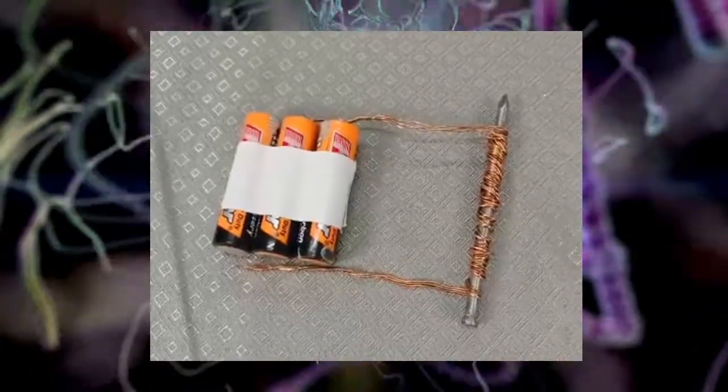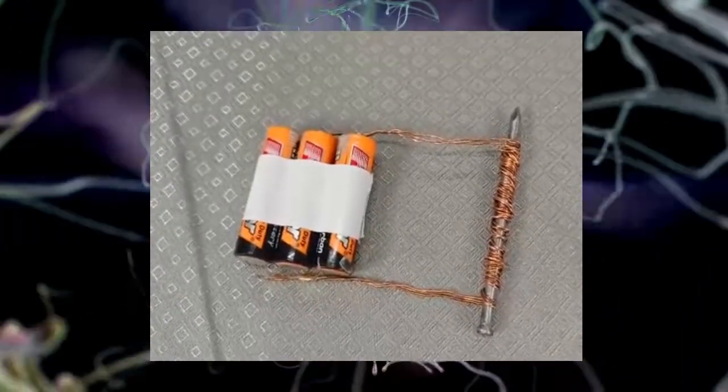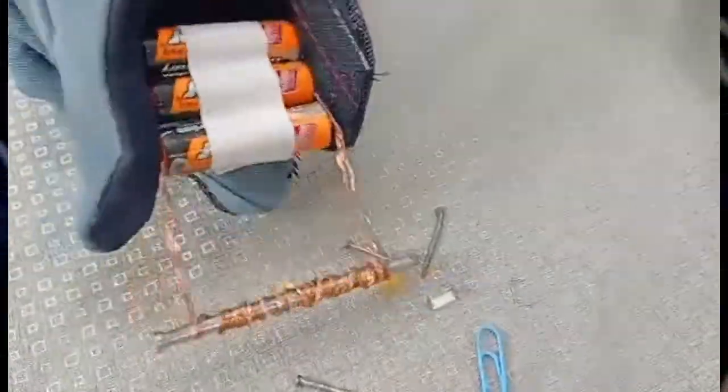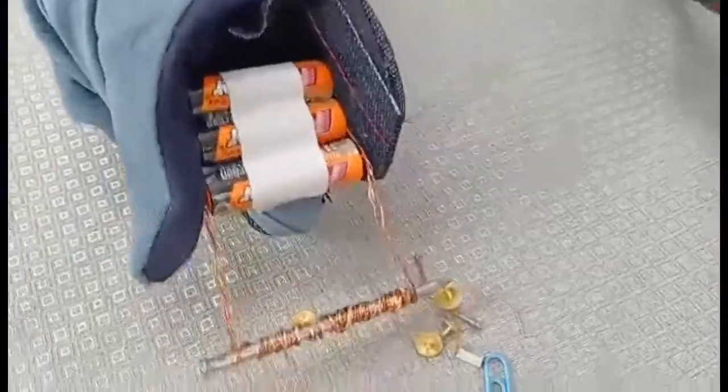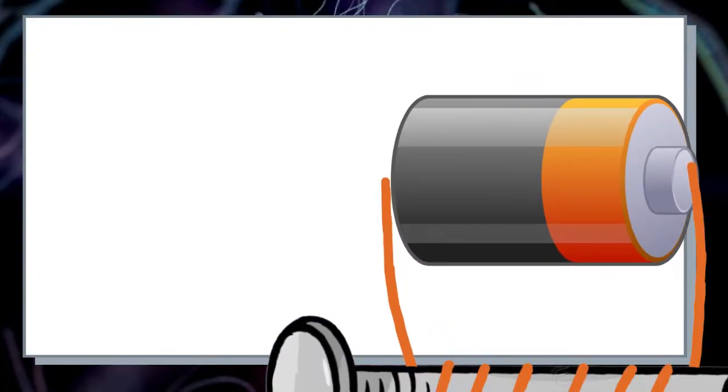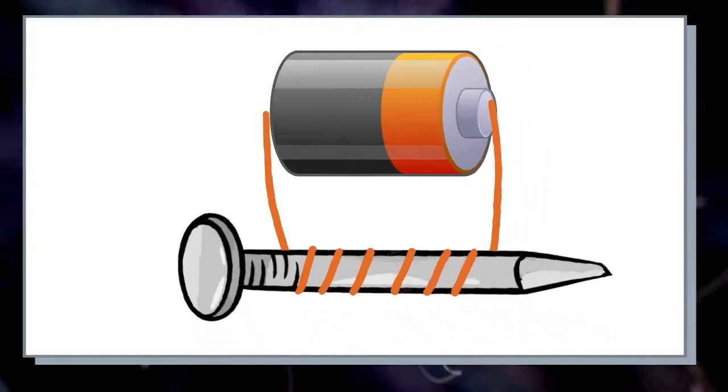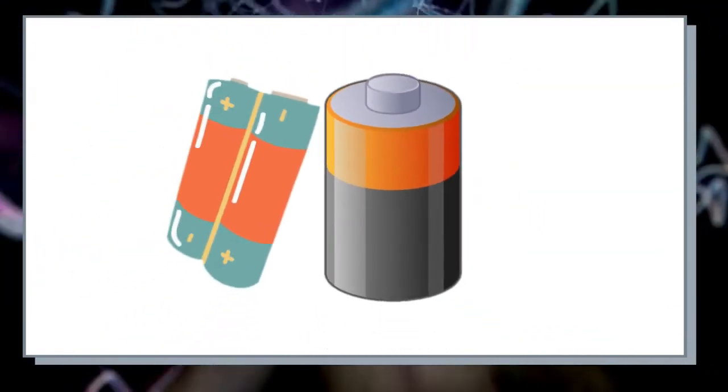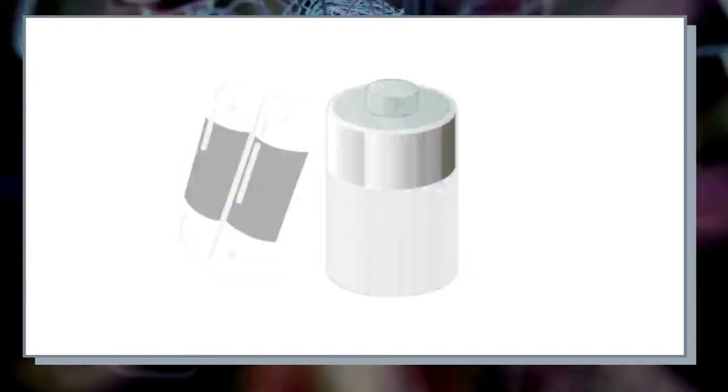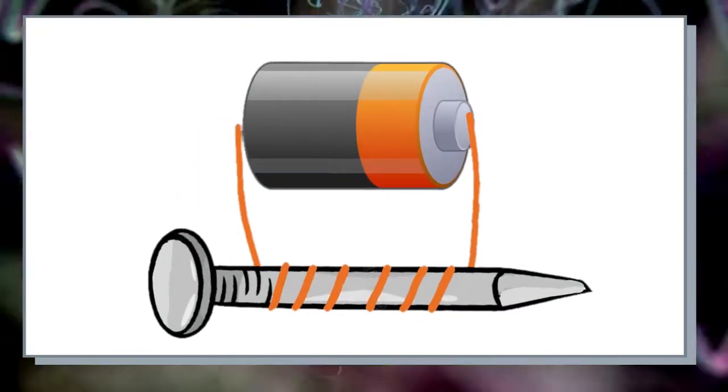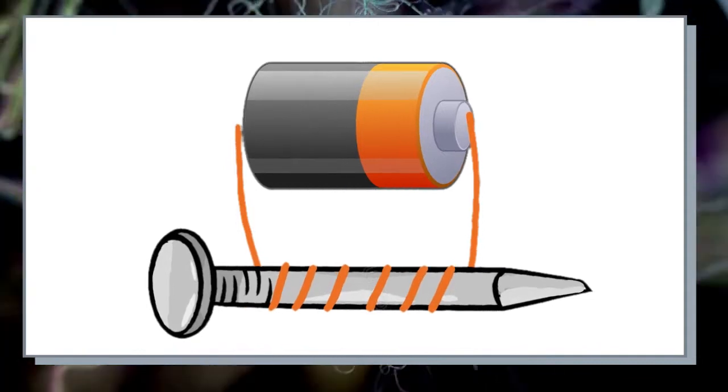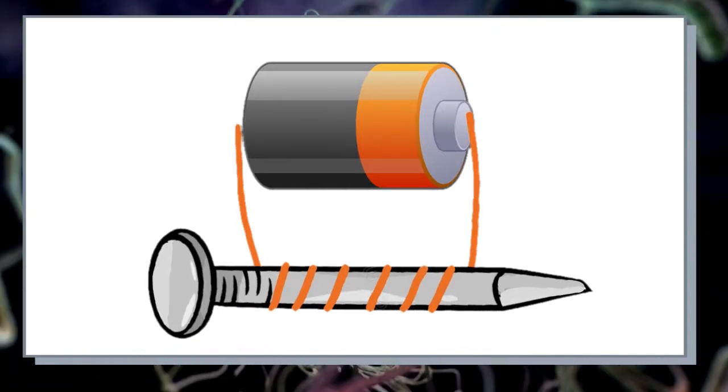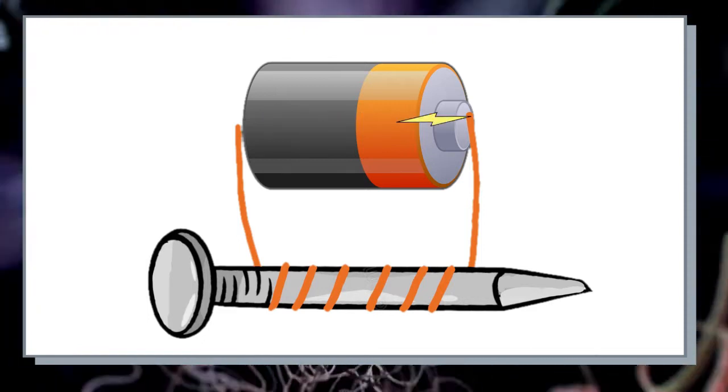Let's try these three batteries. Wow! More metals are attached to the electromagnet. It means that the number of power source or battery also affects the strength of electromagnet. Stronger magnetism is produced when more electrons flow in an electromagnet.